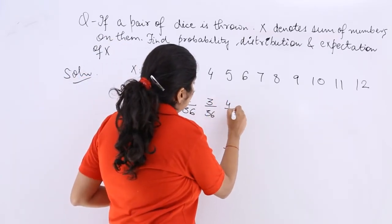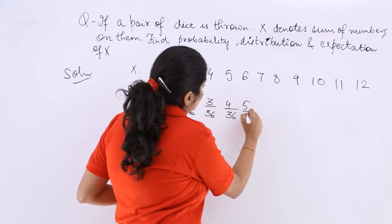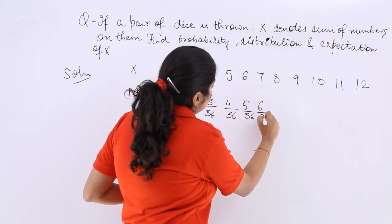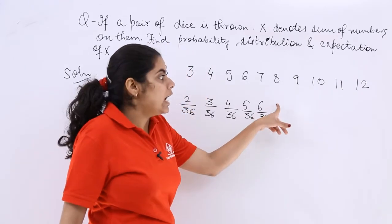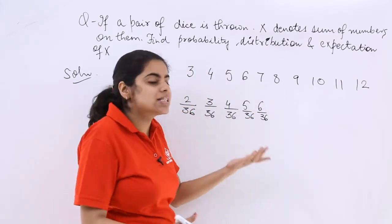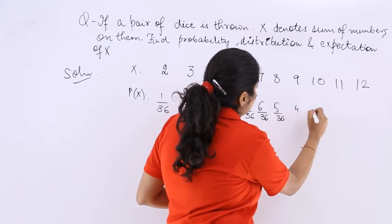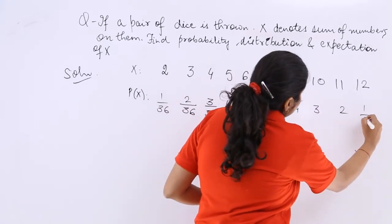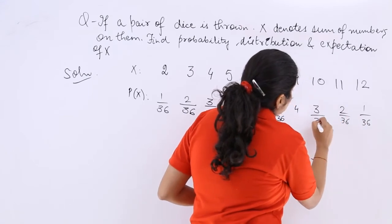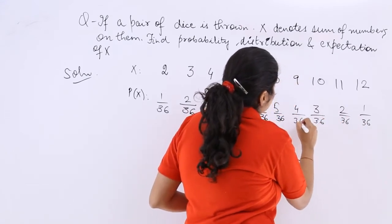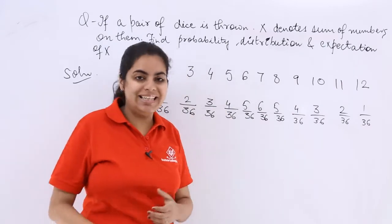You can calculate on your own. This is 4 over 36, 5 over 36, 6 over 36. Then again, this will be in the reverse order. This some people have already learned. You can calculate on your own and just write the values. And this over 36 all over the cases. Now these are all different cases.